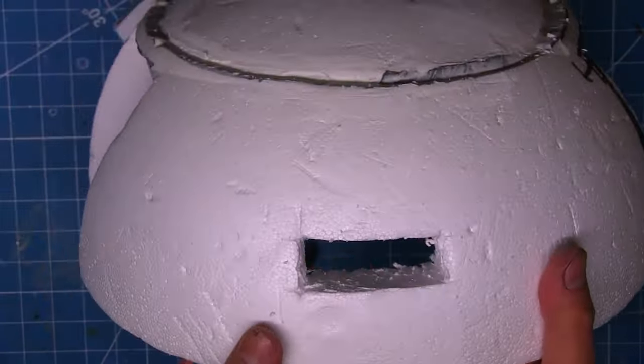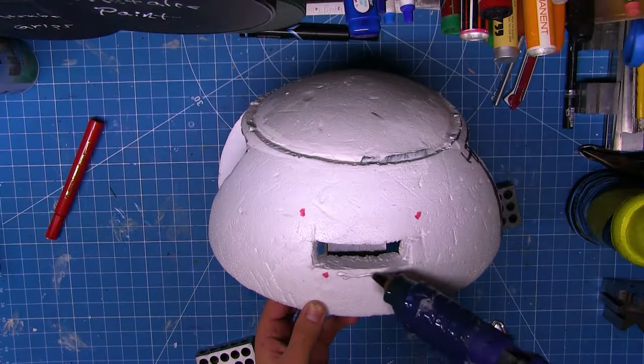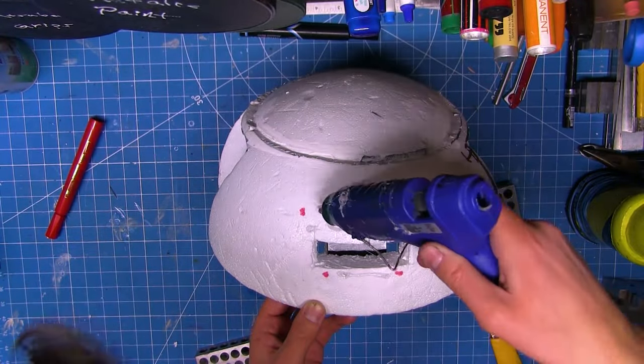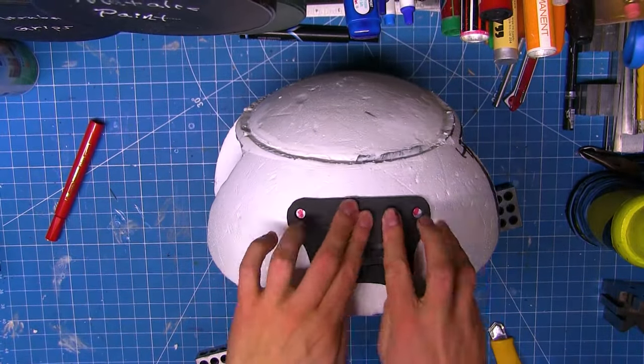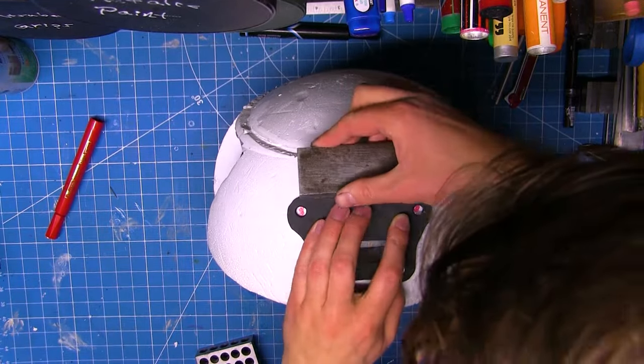However, styrofoam does not equal sci-fi. So I cut a hole in the back just to get more depth if those vents ever end up pointed straight towards the camera. Then I glued it on and moved on to the lower half.